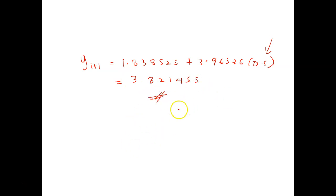There you go, so you solve everything, so your answer will be your x, your y, so this is 0, this is 1, and this is 0.5, and 1.0. So the answer for this is 3.821455, and the answer for this one is 1.838525. Thank you.